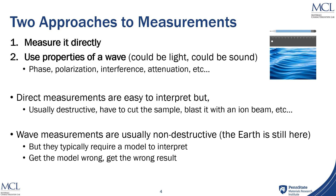Direct measurements are easy to interpret, but they're usually destructive. You either have to cut the sample, blast it with an ion beam, or do something else that allows you to directly measure the thickness of the film. Wave measurements are generally non-destructive — obviously the earth is still here, even though we can measure the core-mantle boundary. But typically they require a model to interpret. If you get the model wrong, you'll get the wrong result.